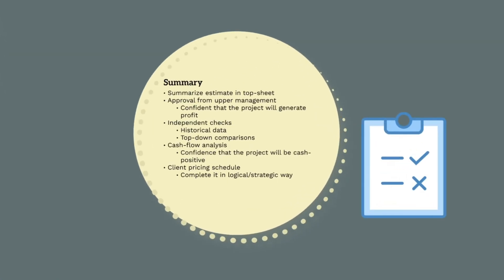Finally, to summarise the estimate, we'll need to go through the process of reviewing and translating our estimate into a format where we can submit it to our client. We'll need to get approval from senior management and have our estimate independently reviewed. As discussed, this will likely happen through top-down and parametric checks. The management staff at our company want to be confident that the project will generate a profit before they submit anything to a client.